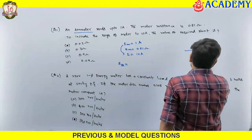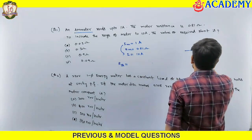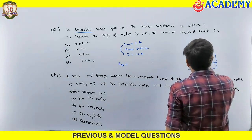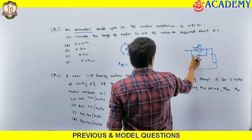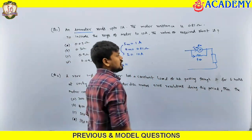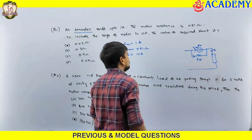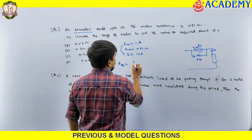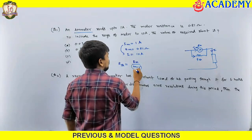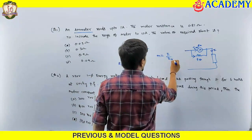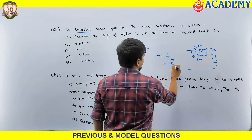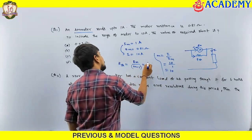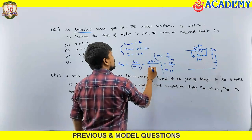To extend the range of an ammeter, we connect one shunt resistance in parallel with the meter. The formula is R_sh = RM / (M − 1), where M = I / IM. Here I = 10 amperes and IM = 1 ampere, so M = 10. Substituting: R_sh = 0.81 / (10 − 1) = 0.81 / 9.